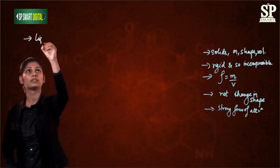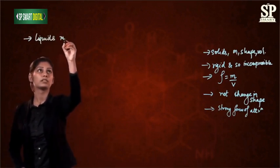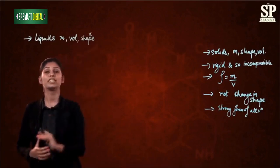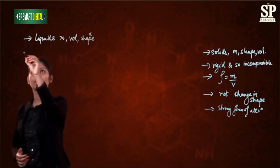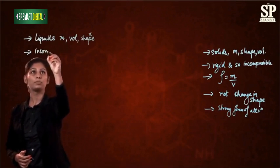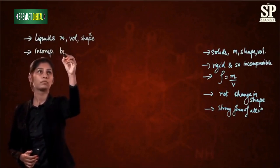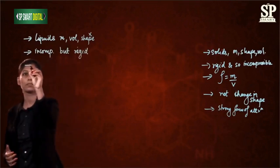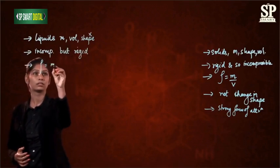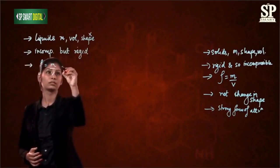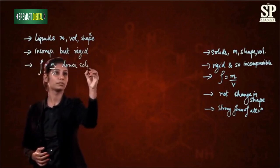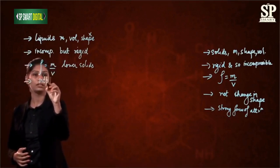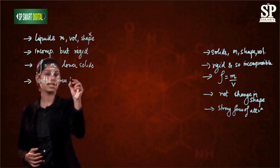Let's move on to the properties of liquids. Liquids have definite mass and volume but no definite shape — they take the shape of the container. They are incompressible but not rigid. Their density is high but lower than that of solids. They have weaker inter-particle forces of attraction than solids.